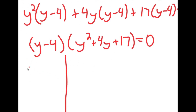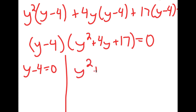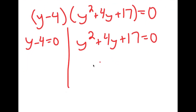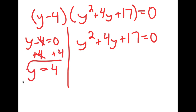This gives me two equations: y minus 4 equals 0, and y squared plus 4y plus 17 equals 0. For y minus 4 equals 0, I add 4 on both sides and get y equals 4.